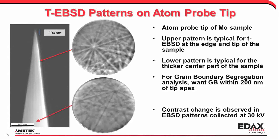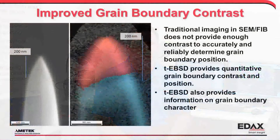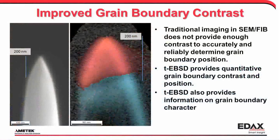The conical shapes of the specimens cause a variance in pattern quality and contrast, making band detection and pattern indexing difficult. Specialized image processing routines have been developed to ensure accurate band detection from patterns with different regions and volumes within the specimen. Detector collection parameters are also optimized to reduce the time and effort required to obtain the required information.